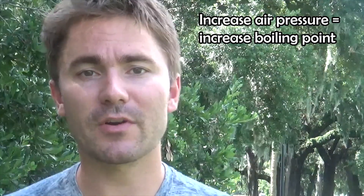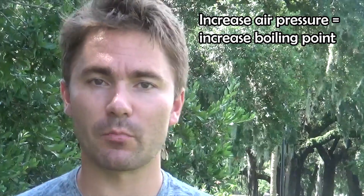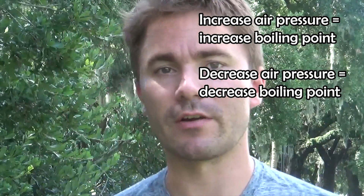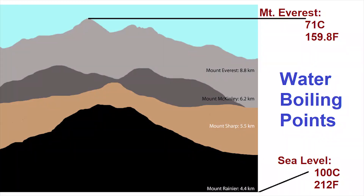Changing the air pressure is the first way to change the boiling point of a liquid. Increasing the air pressure will increase the temperature required to boil the liquid, whereas decreasing the pressure will decrease the temperature required. At sea level, water boils at 100 degrees Celsius or 212 degrees Fahrenheit. But on top of Mount Everest, the air pressure is so low that the boiling point of water decreases by 29 degrees Celsius, down to 71 degrees Celsius.